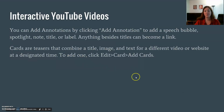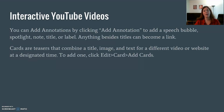Cards are teasers that combine a title, an image, and text for a different video or website, and they appear at a designated time. This is a little bit more complicated than the annotation. You can add one by clicking Edit, then Card, then Add Cards, then create whatever kind of card you want.